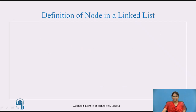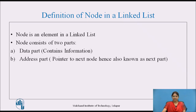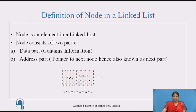Definition of node in a linked list: A node is an element in a linked list. It consists of two parts — a data part, which contains the information, and the address part, which is a pointer to the next node, hence also known as the next part. The first part is the data part which contains the information, and the second part is the address part which stores the address of the next node, hence also called the next.